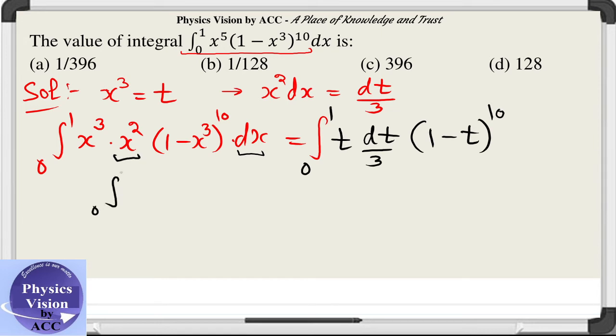Using the property of beta function, which is the definition of this integral, integral x raise to the power m minus 1 into 1 minus x raise to the power n minus 1 dx is actually beta m n. We will compare the values of m minus 1 by 1 and n minus 1 by 10.